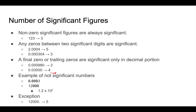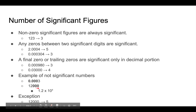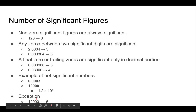For 0.03000, the last three zeros are trailing zeros in the decimal portion, so they are significant, giving us four significant figures. Examples of non-significant figures: leading zeros before a significant digit are not significant — those four leading zeros are bolded to show they are not significant. Also, trailing zeros that are not in the decimal portion, like in 12,000, are not significant. That number has only two significant figures, with the three trailing zeros being insignificant.